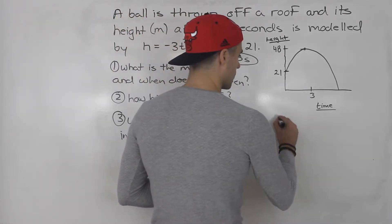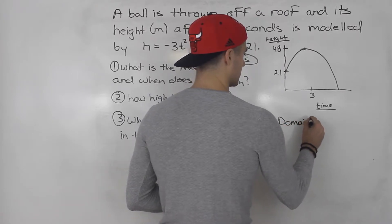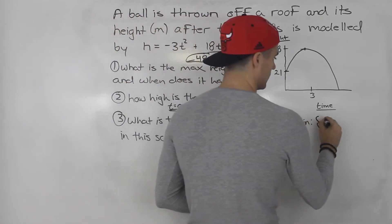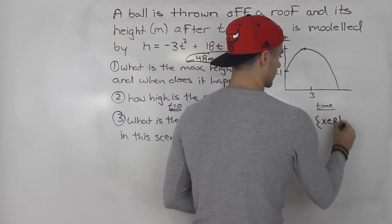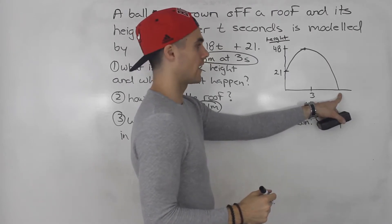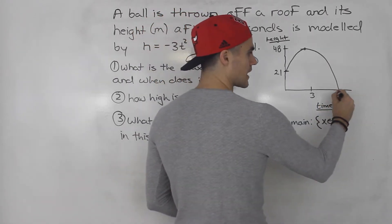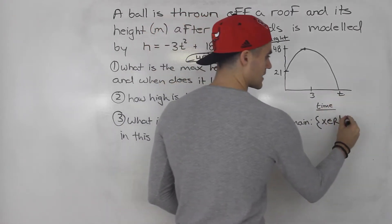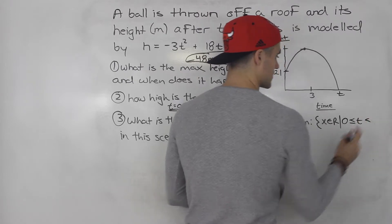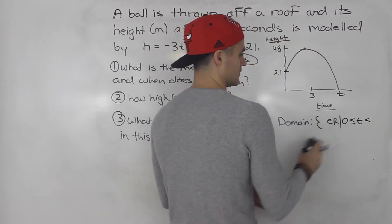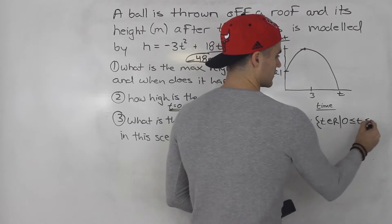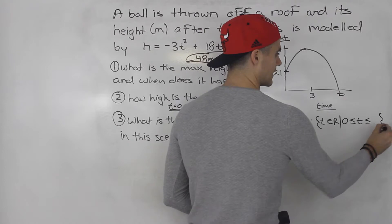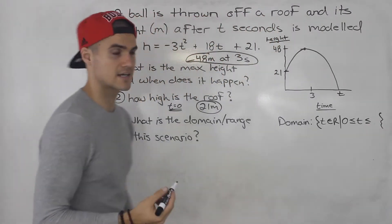So let's start with the domain. What's the domain going to be? Well, this is actually pretty tricky because what we have to do is we have to find out when does the ball hit the ground. We need to find out this time here, right? Because the time is going to be between zero seconds and that time there. Sorry, this should be t. T is an element of real numbers. So time is in between zero and the time that it hits the ground. So we have to find when does it hit the ground?